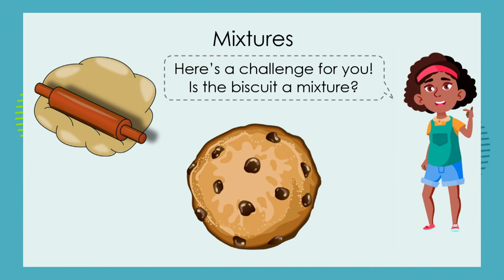Now I want to get back to one of the points I made earlier and give you the biscuit challenge. Is the biscuit a mixture? Let's think about this. We know that mixtures are substances that have been combined together, and we know that there's no chemical bonding or chemical changes that have happened to the substances — and therefore we could separate them. So, let's look at our biscuit.